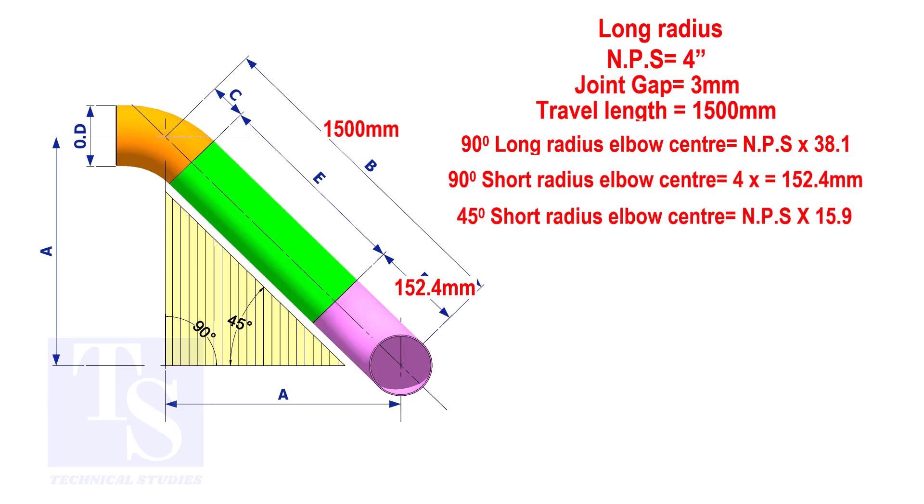To calculate the elbow center of a 45 degree long radius elbow, multiply the nominal pipe size by 15.9. The answer is 63.6 millimeters.